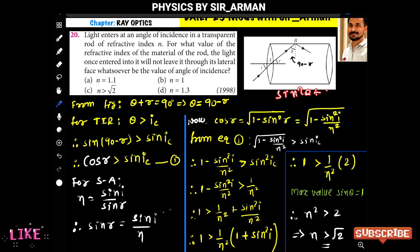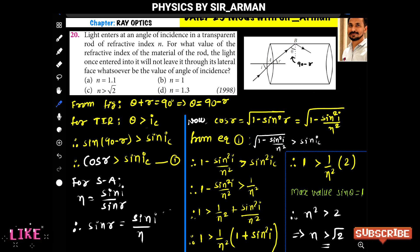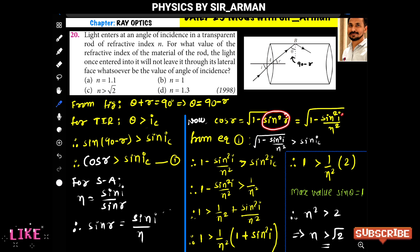We know that sin²θ + cos²θ = 1, so cos²θ = 1 - sin²θ, and therefore cos(r) = √(1 - sin²r). Since sin(r) = sin(i) / n, we substitute: cos(r) = √(1 - sin²(i) / n²).